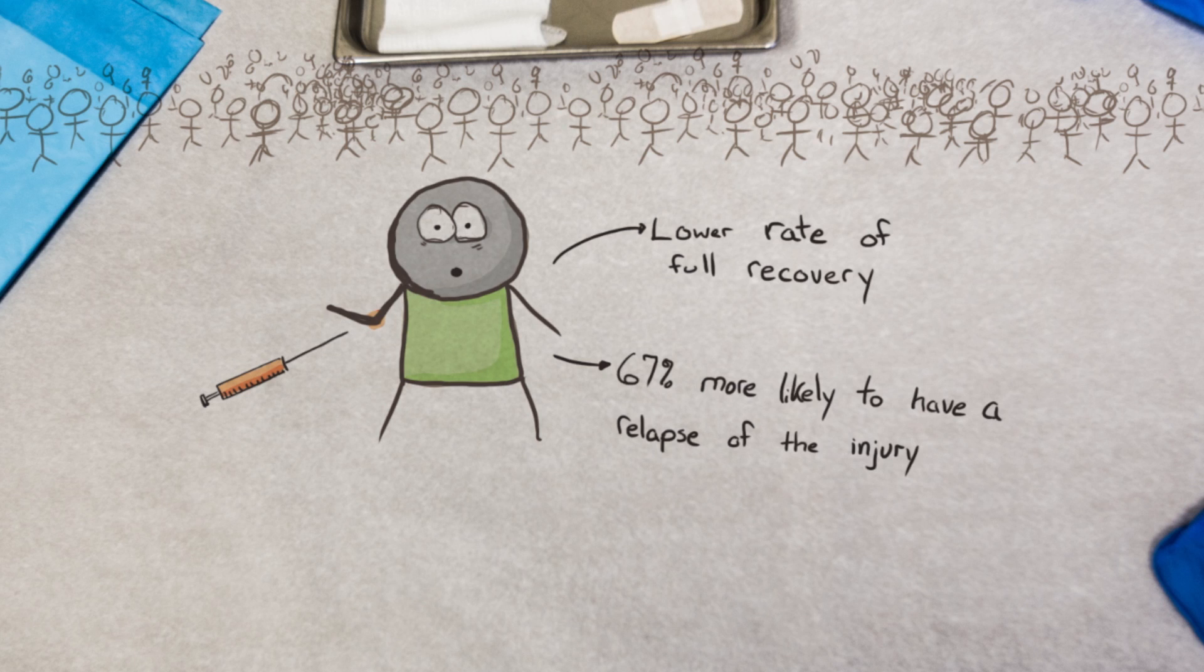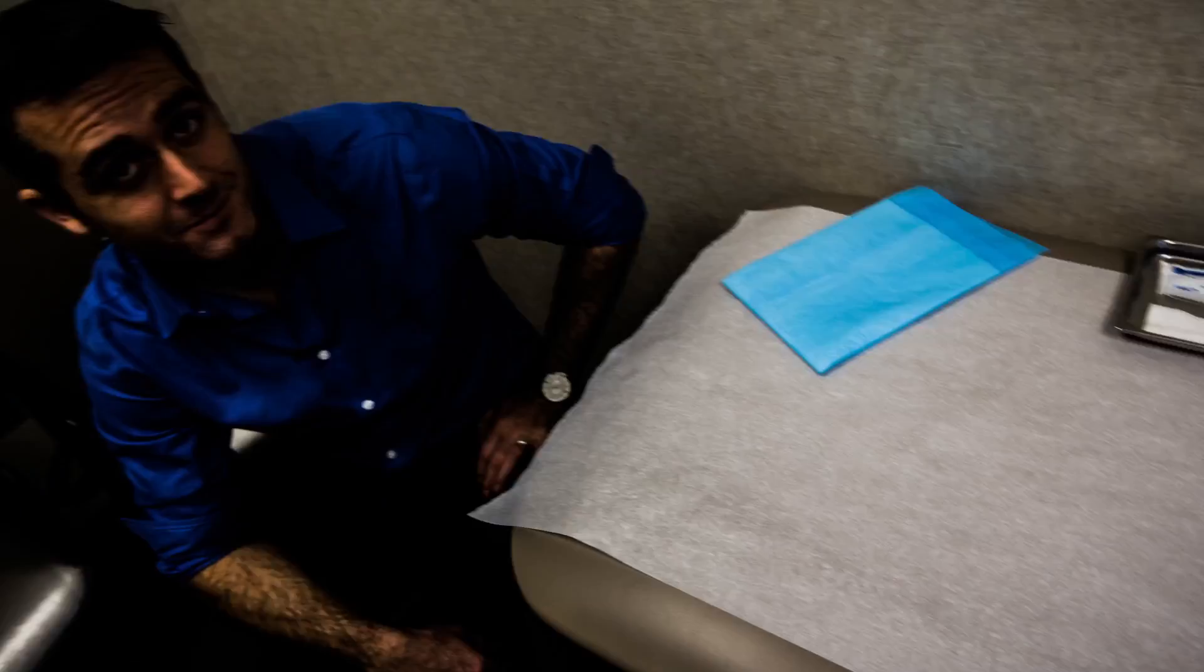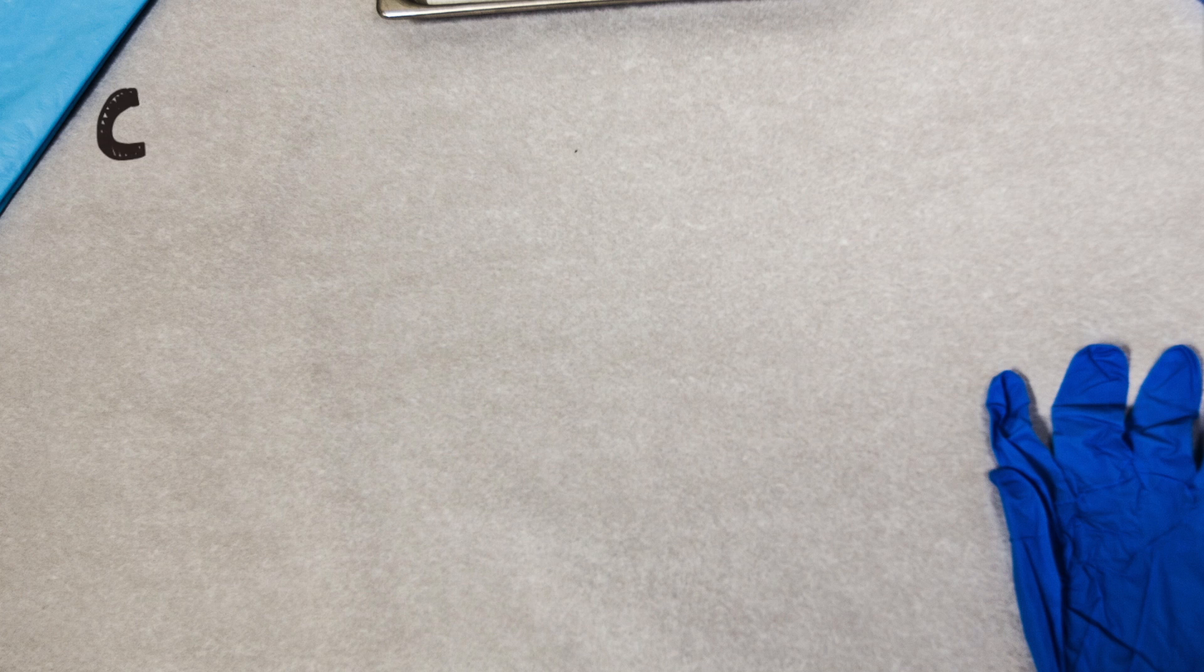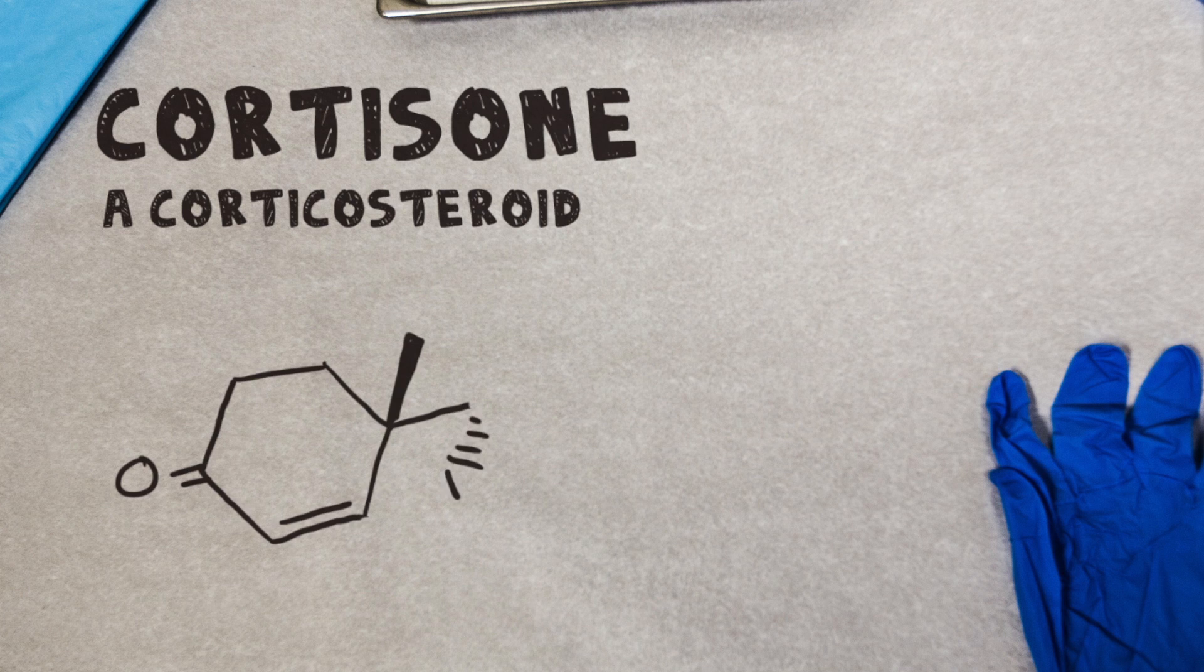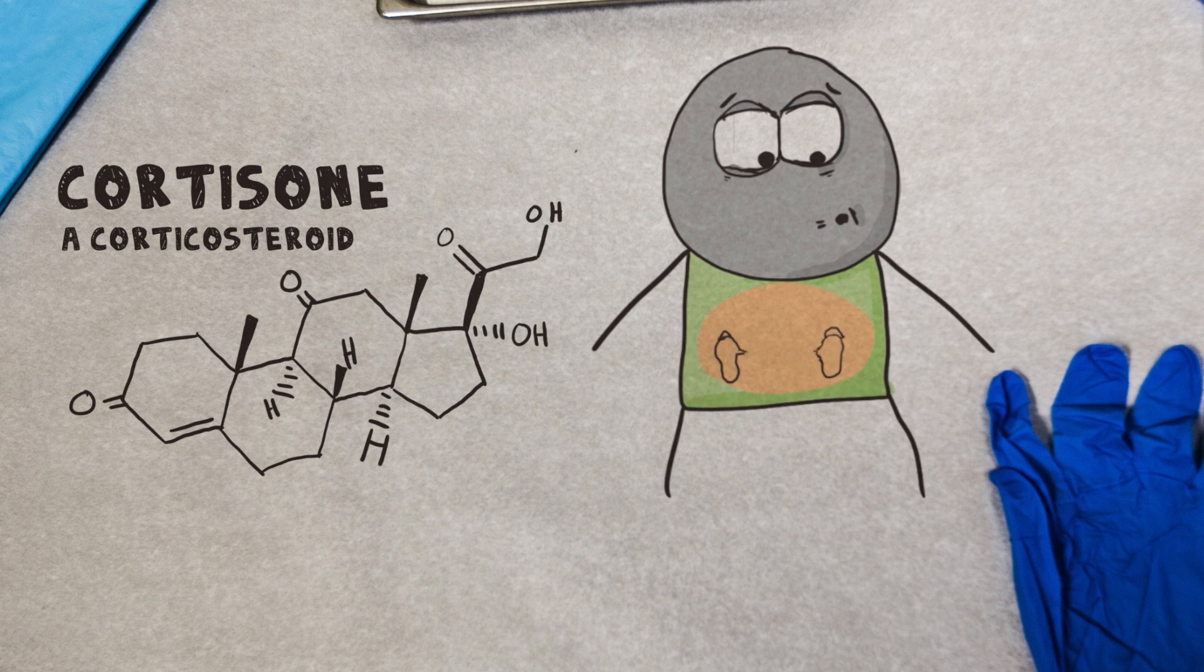How is that possible? To understand it, you have to know more about cortisone. Cortisone is a corticosteroid hormone. It's produced naturally in the body via the adrenal cortex.